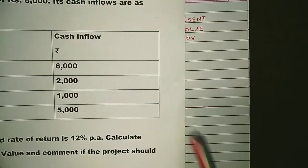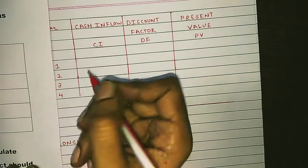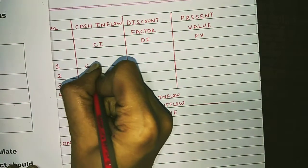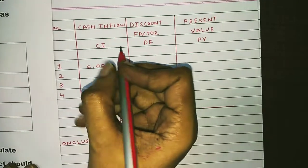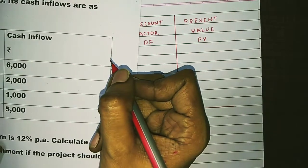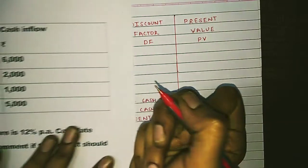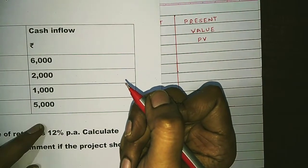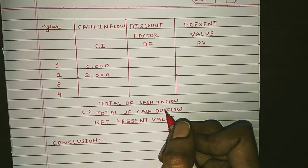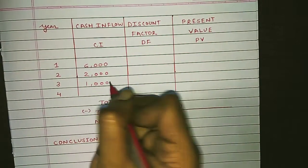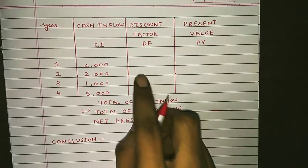The question has already given us the cash inflows, so we take them down as they are. The cash inflow for year one is rupees 6000, for year two it is rupees 2000, for year three it is rupees 1000, and for year four it is rupees 5000.